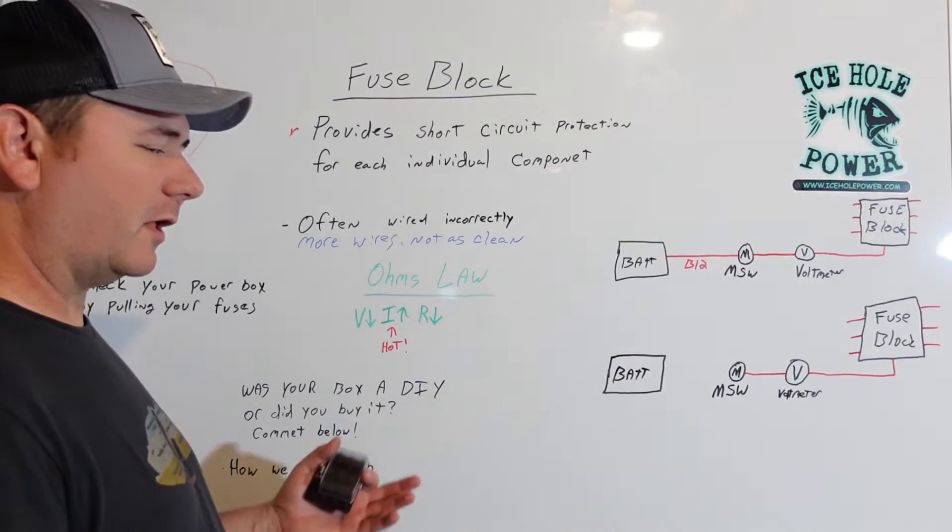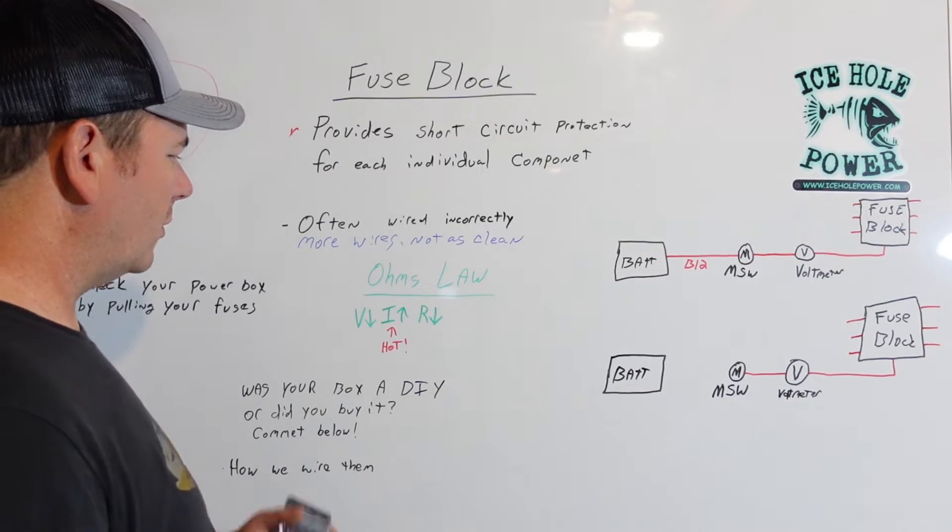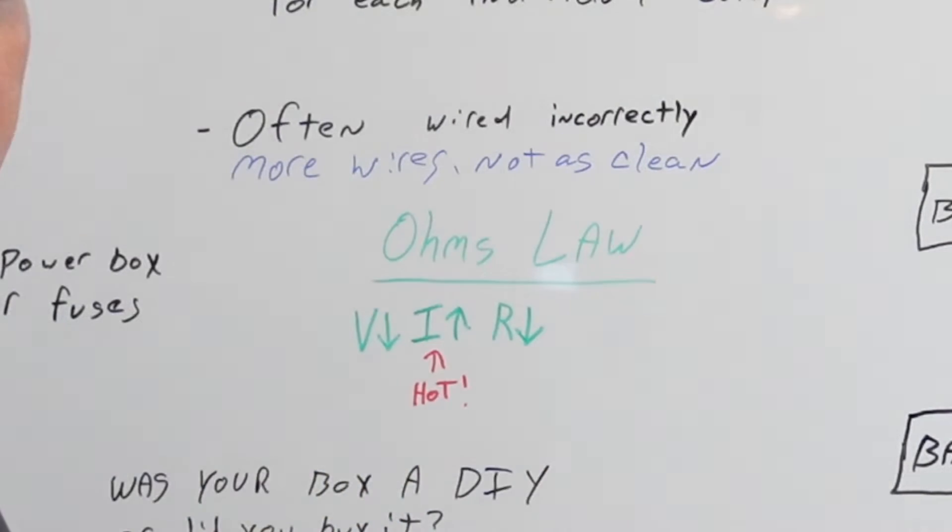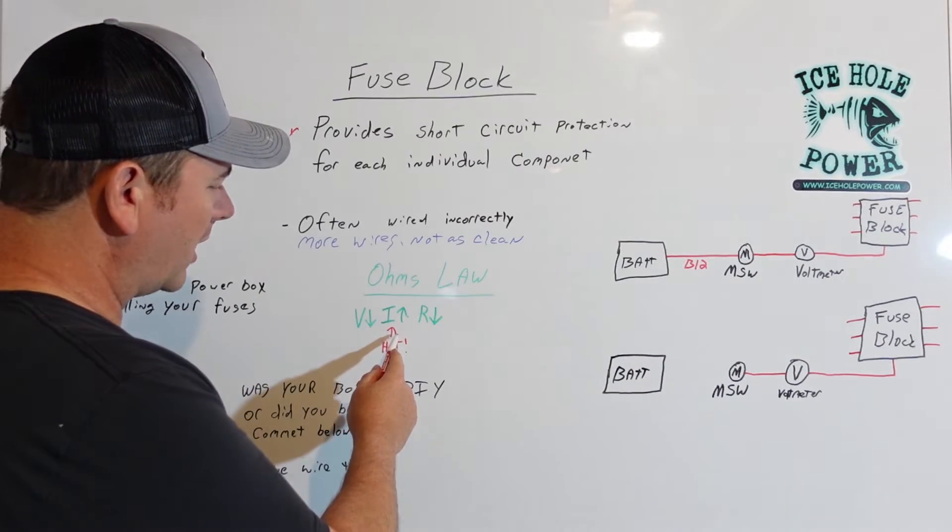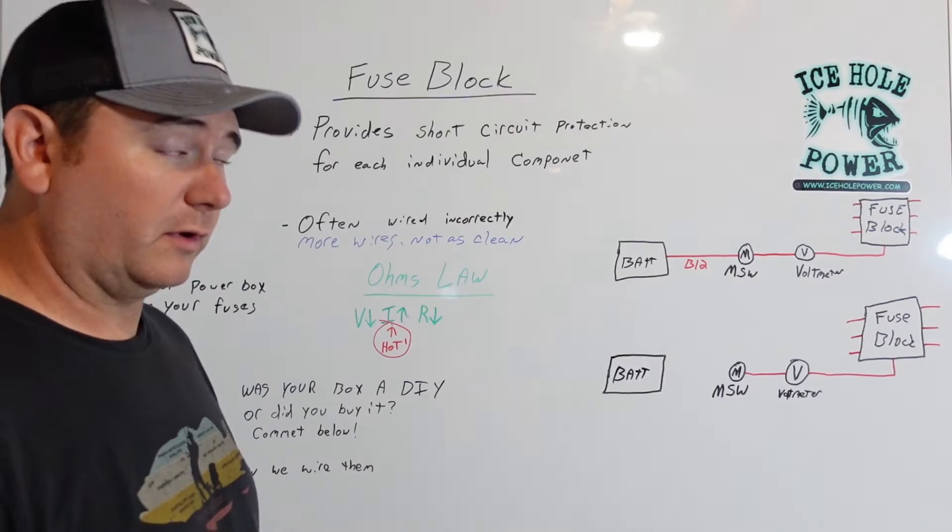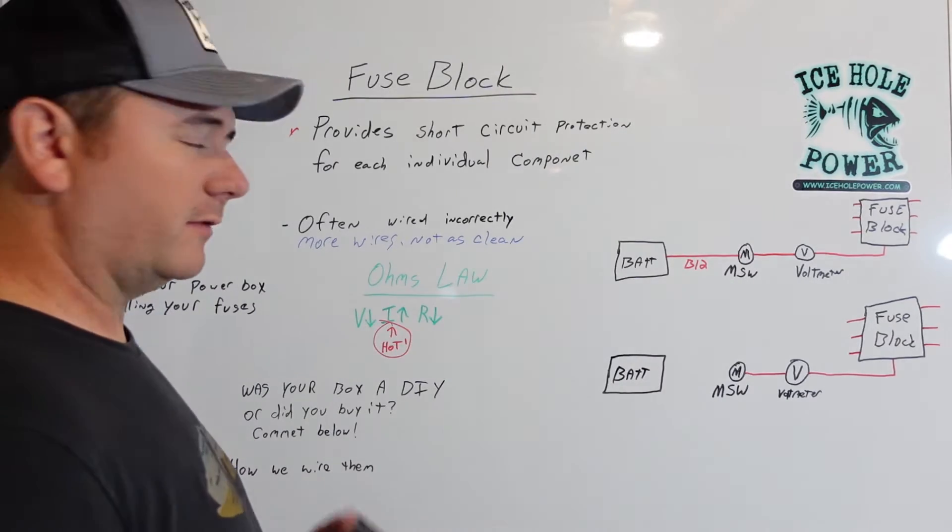That basically keeps things from getting hot. So Ohm's law tells us when we have a short, our voltage goes down, our current goes up, and our resistance is pretty much nothing. So the problem is when our current goes up really high, things get hot, things start on fire.